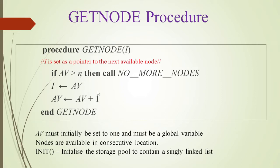All the nodes are sequentially represented. We check if av is greater than n — if n nodes are allocated, we say no more nodes. Otherwise, av points to the current free node and its address is stored in i. Then av will be pointing to the next node, so we are allocating the free node to the procedure.